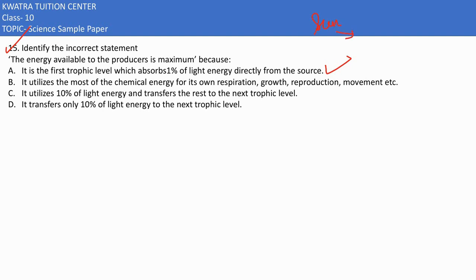The sun produces only 1%. The rest of them get 10%, but from the sun which produces 1%, it utilizes the most of the chemical energy for its own respiration, growth, reproduction, and movement.